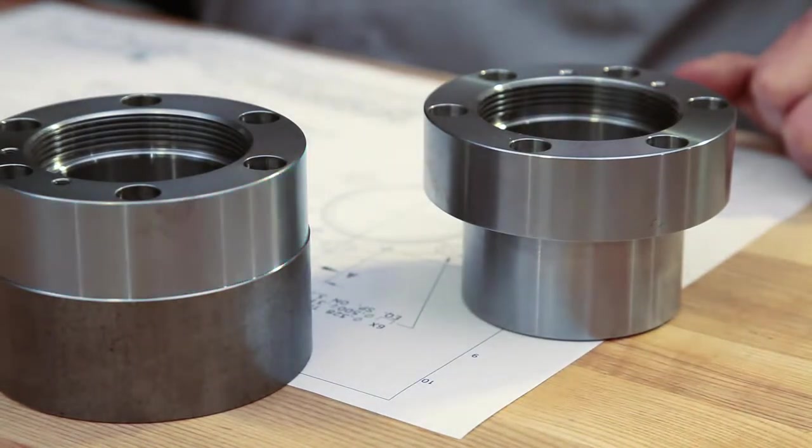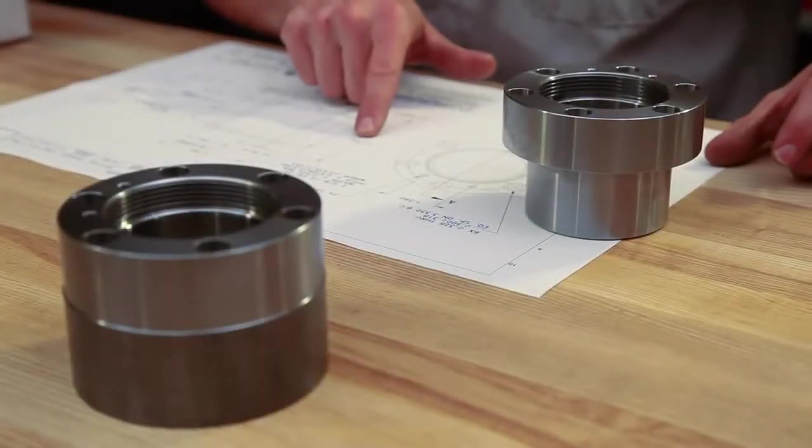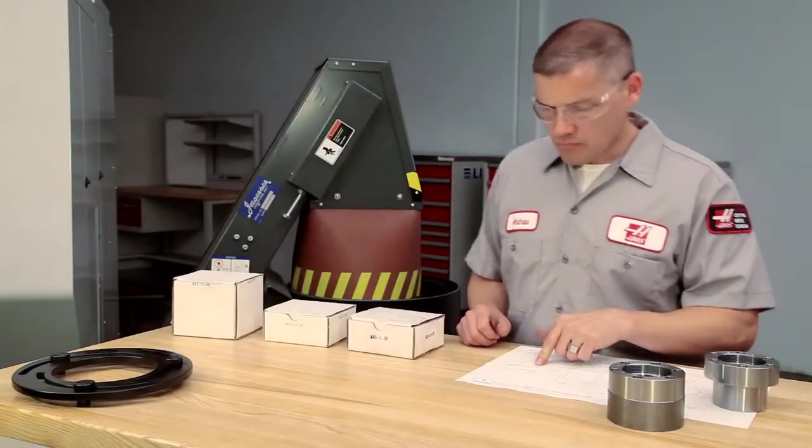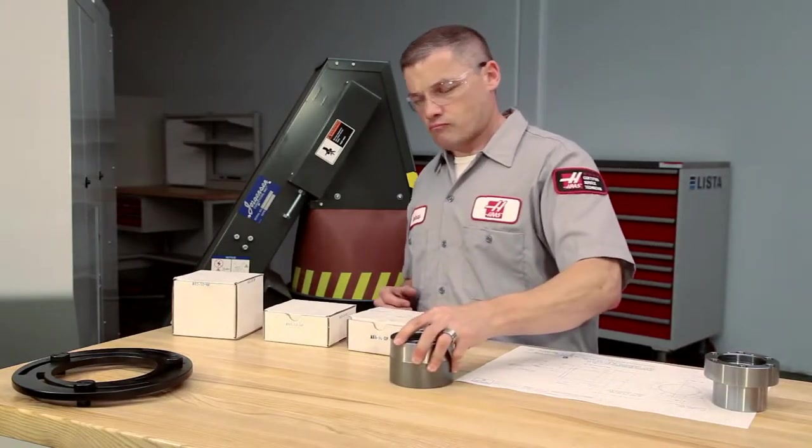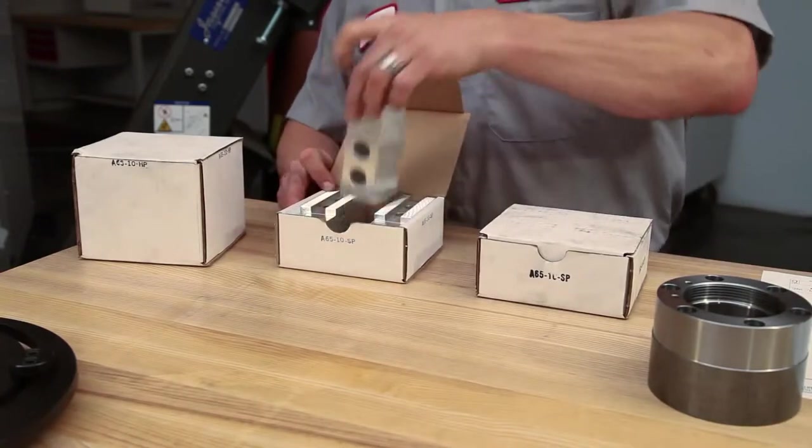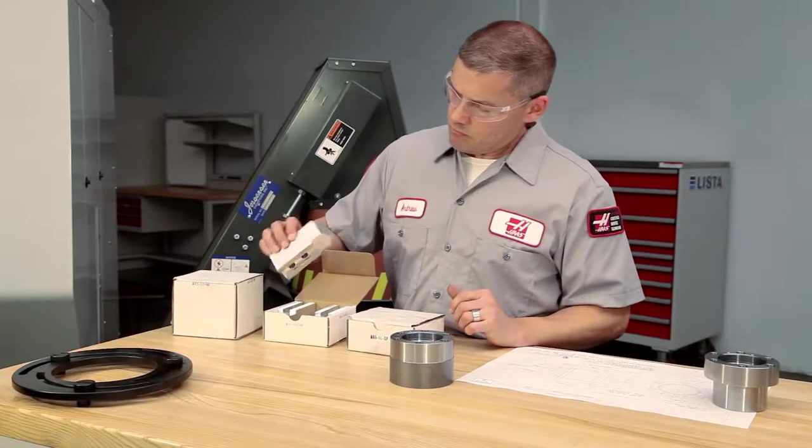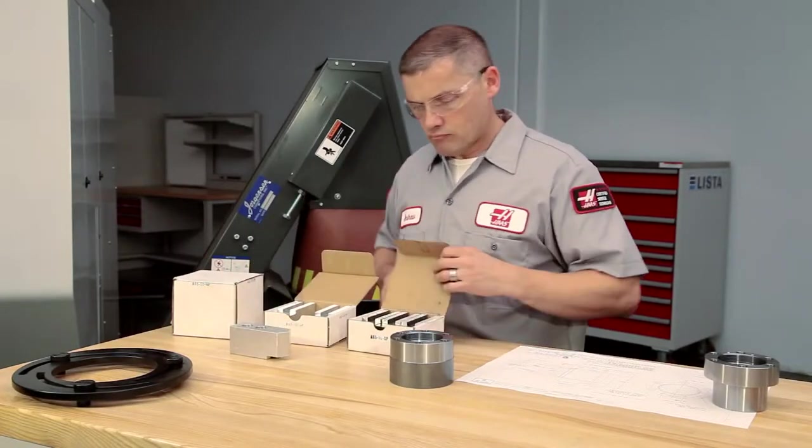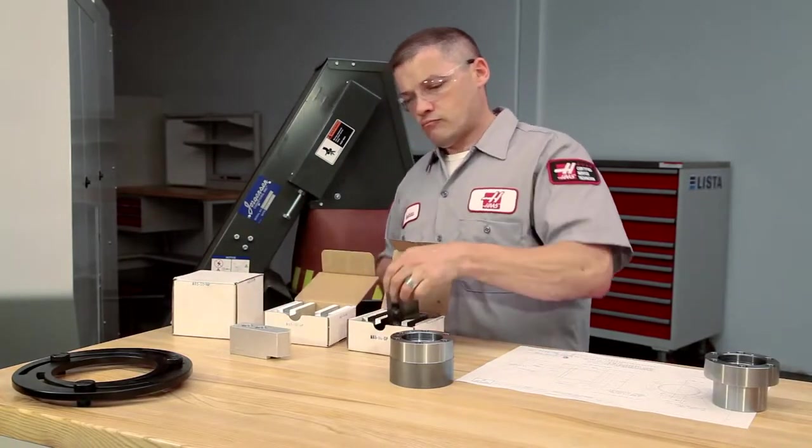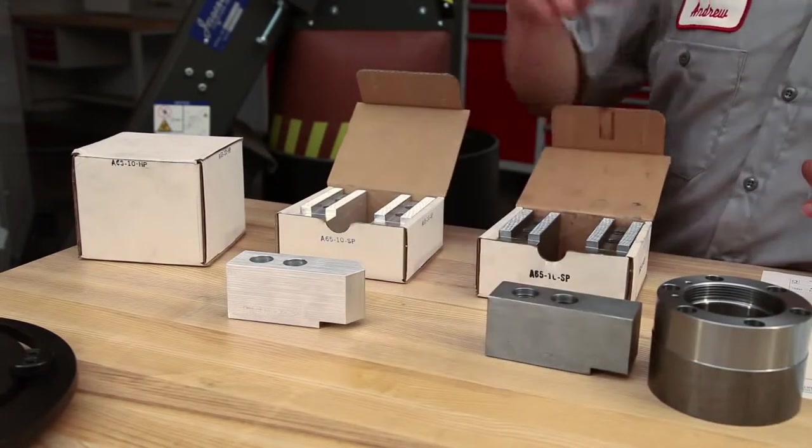Soft jaws will allow us to maintain the best concentricity to the accurate surfaces we've already machined. Before we start cutting, let's go over some soft jaw fundamentals. First, we need to choose whether we'll use aluminum or steel jaws. Aluminum jaws are typically used to grip lightweight or hollow parts where clamp force is low. Steel jaws will be used where clamping forces are higher and jaw longevity is important.